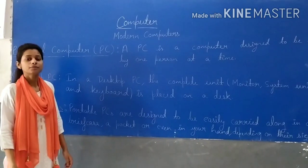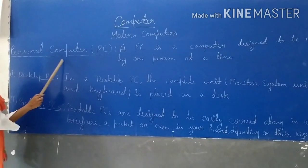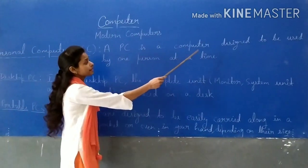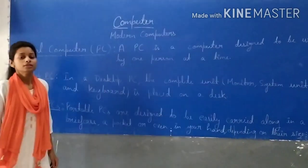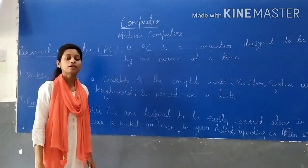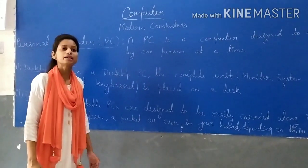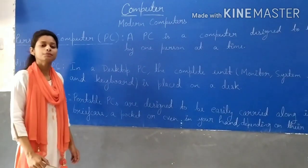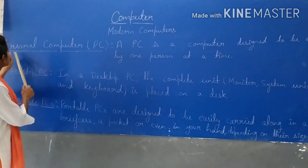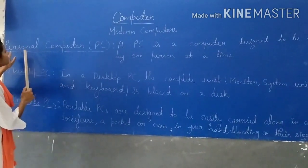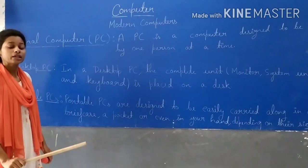All computers that we commonly use are modern computers. For example, a PC. PC is a computer designed to be used by one person at a time, which is a personal computer. Whatever you can use in your computer lab, all of those are personal computers. This computer is meant for one person.